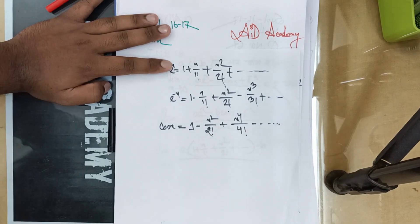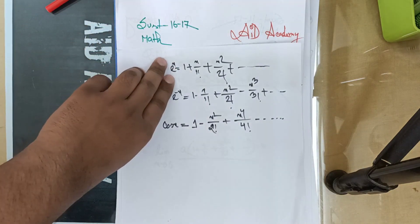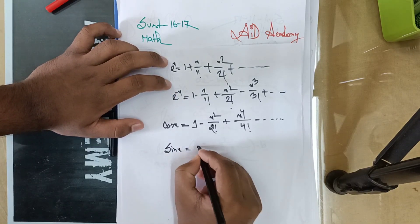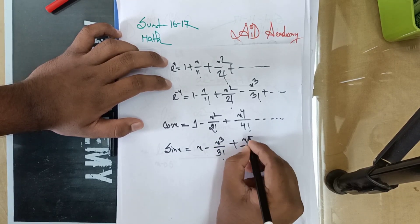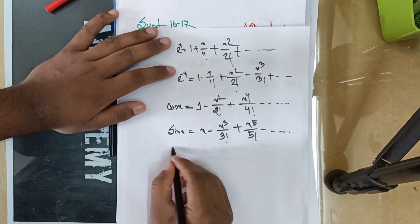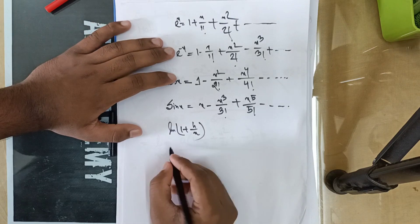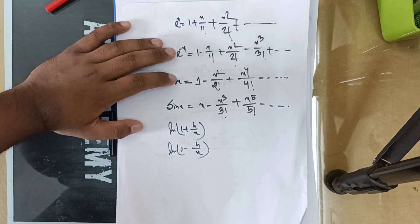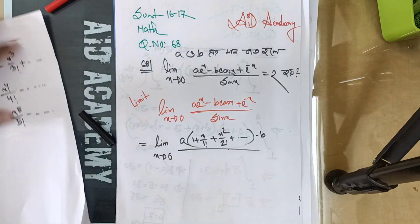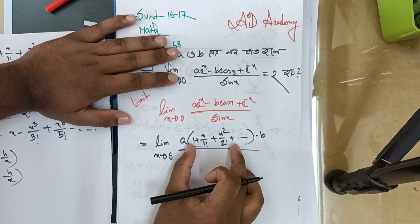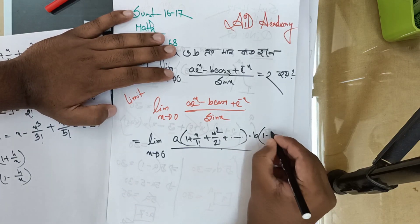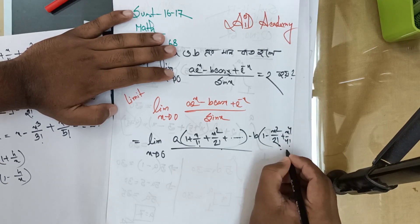We expand cos(x) as: 1 minus x squared divided by 2 factorial plus x to the power 4 divided by 4 factorial, and so on. We expand sin(x) as: x minus x cubed divided by 3 factorial plus x to the power 5 divided by 5 factorial, and so on. Now let us expand e^x as: 1 plus x by 1 factorial plus x squared by 2 factorial, and so on.